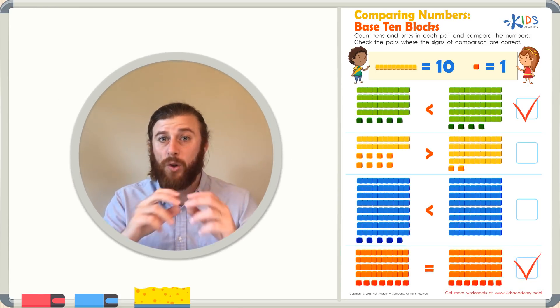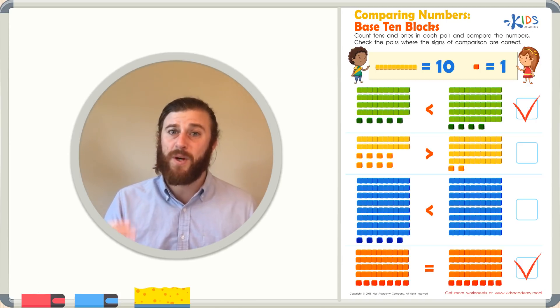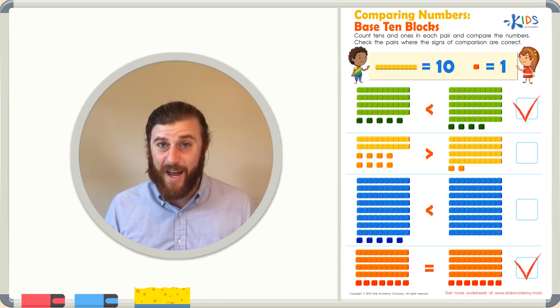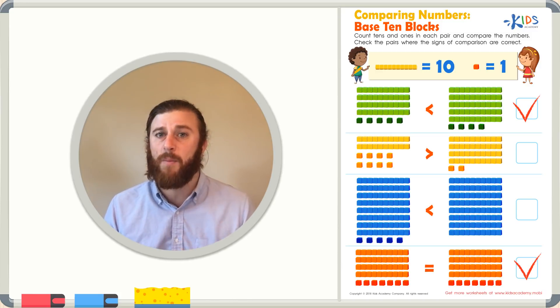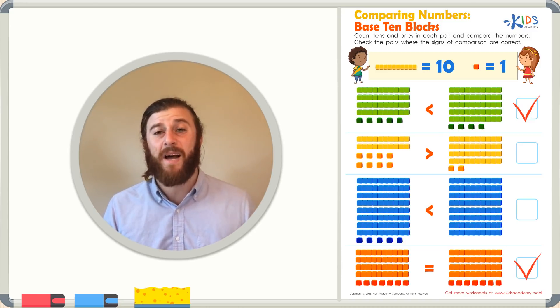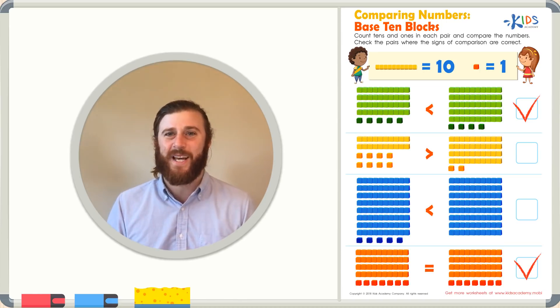Remember boys and girls, the longs are worth 10. So you can count by 10s to help you compare numbers easier. Then look and see if the other number has a greater or less than number of 10s. If they're the same, go ahead and count the ones or the cubes to see which number is greater in the end. Thanks for watching boys and girls. See you next time.